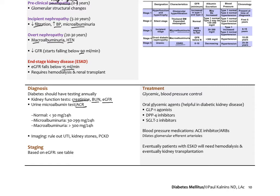Microalbuminuria is 30 to 299 milligrams, and macroalbuminuria is over 300 milligrams in 24 hours. The ACR is nice because we don't have to collect over 24 hours, but we can still detect microalbuminuria. We might also do imaging to rule out UTI, kidney stones, or polycystic kidney disease if suspected. We stage based on the GFR using the classic charts for GFR levels to determine where a person is in terms of renal disease.